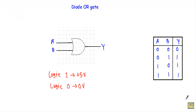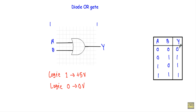In this video I will show you the operation of a diode OR gate. If I have an OR gate with two inputs A and B, if at least one of the inputs is at logic 1, our output will be at logic 1. This is the truth table of the diode OR gate. When input A is at logic 0 and input B is at logic 0, our output Y will be at logic 0.